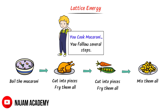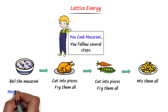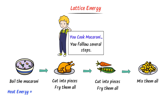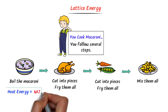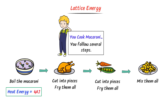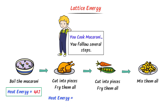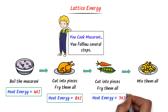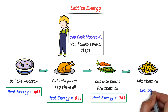Now listen carefully. When you boil the macaroni, you provide some sort of heat energy — let's say 40 joules of energy. Similarly, when you fry the chicken pieces, you also provide some sort of heat energy — let's say 80 joules. Also, you provide energy when you fry the vegetables — let's say 70 joules. Finally, you get the delicious food of macaroni.